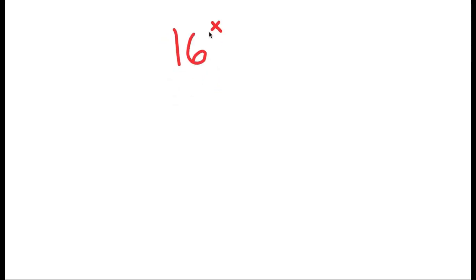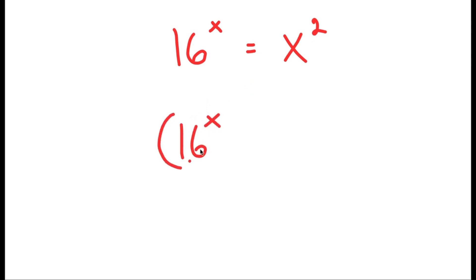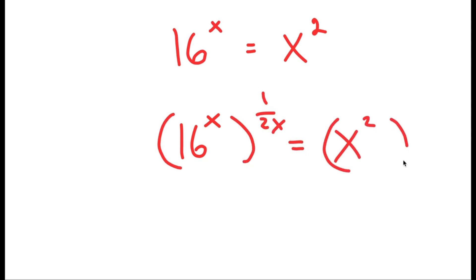In this video, I'm going to solve the equation 16 to the power of x equals x to the power of 2. To solve this, I'll start by taking the power of 1 over 2x on both sides, giving 16 to the power of x to the power of 1 over 2x equals x to the power of 2 to the power of 1 over 2x.